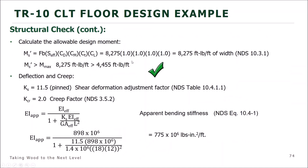Deflection criteria from IBC Chapter 16: for short-term live load, L/360; for total load, L/240. A footnote related to CLT: for cross-laminated timber installed under dry conditions, the creep component for long-term deflection can be estimated using 1.0 times the dead load. There is also a creep factor, K-sub-CR, in NDS Chapter 3 for a more detailed approach.